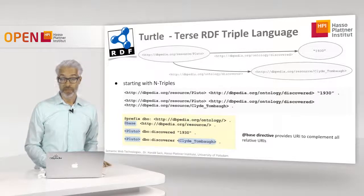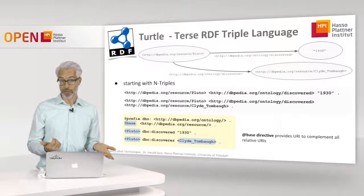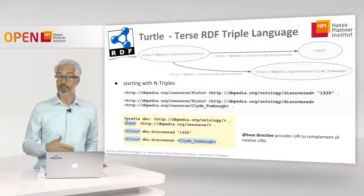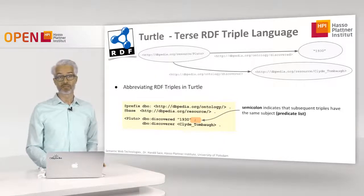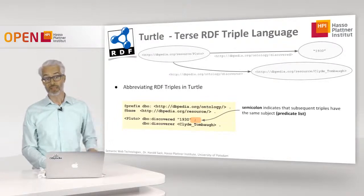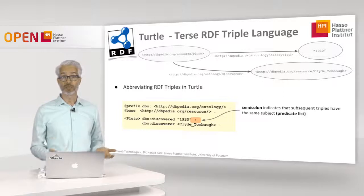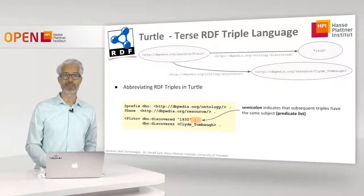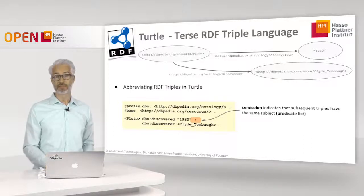We can do even more. As you see in the graph representation, Pluto only occurs once in one node, but in the Turtle representation we have Pluto twice in both facts we want to represent — this is some kind of redundancy. In Turtle, you can get rid of this redundancy by using a semicolon: the first RDF triple does not end with a period but with a semicolon, which means the subsequent triples have the same subject. This is a so-called predicate list. Pluto is therefore referred to only once in the Turtle file.